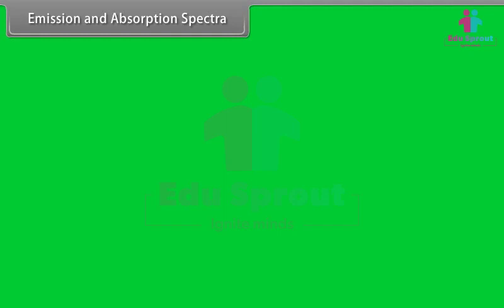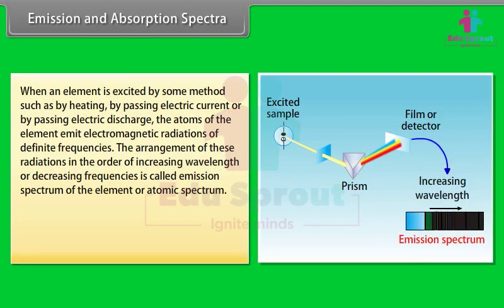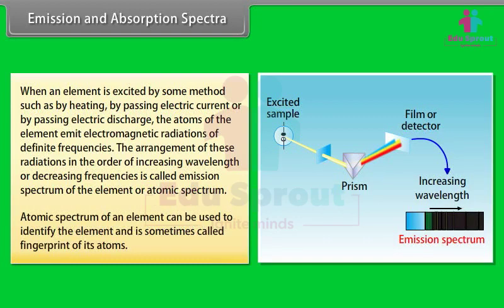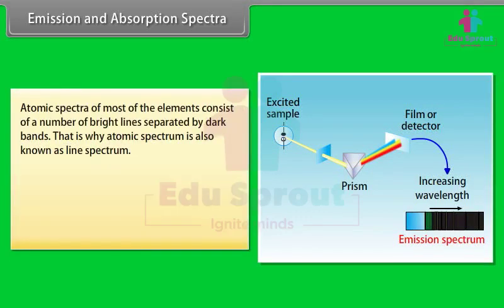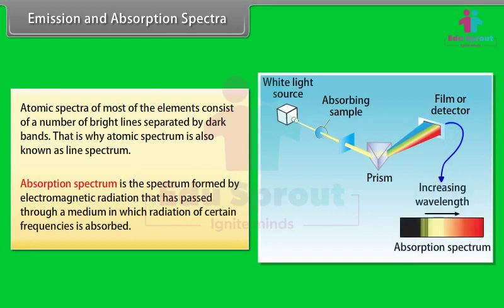Emission and absorption spectra: When an element is excited by heating, electric current, or electric discharge, its atoms emit electromagnetic radiations of definite frequencies. The arrangement of these radiations in order of increasing wavelength is called the emission spectrum or atomic spectrum of the element. Atomic spectrum can be used to identify the element — sometimes called the fingerprint of its atoms. Since atomic spectra consist of bright lines separated by dark bands, it is also known as a line spectrum. Absorption spectrum is formed by radiation that has passed through a medium absorbing certain frequencies.